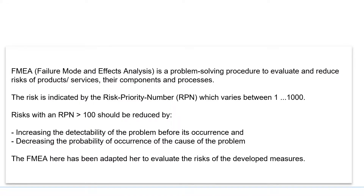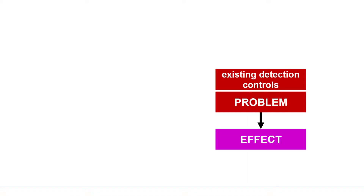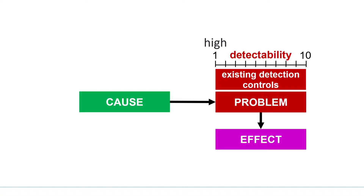In our FMEA we want to identify failures or problems which may result undesirably from the implemented measures, currently given control options to proactively detect these problems, effects of the problems on the business or the customer, and the causes of these problems. After this qualitative analysis, the problem, its causes and effects are quantitatively evaluated. The experts assess how high the proactive detectability of a threatening problem by the existing controls is. This detectability is estimated on a scale of 1 to 10, where 1 means high detectability by the existing controls and 10 means low detectability.